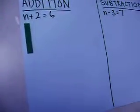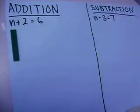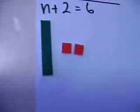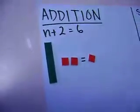For addition, we start with n, which is a variable, plus positive two. Because there's a plus there, this equals positive six.